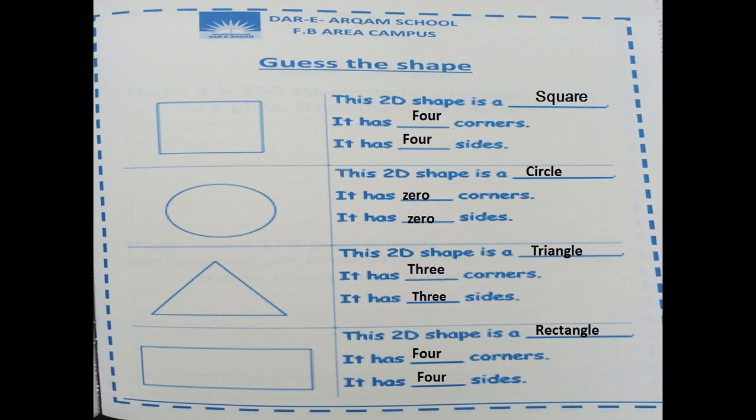Next shape is, this 2D shape is a triangle. How many sides does it have? Three sides and three corners, alright. And the last one is rectangle, very nice. It has four corners and four sides.